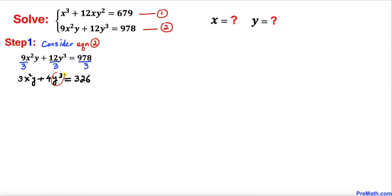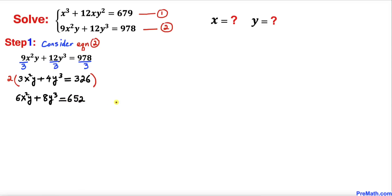We know this is y³. We can make this 4 into 2³ if we multiply by 2. So let's multiply across the board by 2 on both sides of this equation. Once we multiply, that gives us 6x²y + 8y³ = 652. Let's call this equation number three.